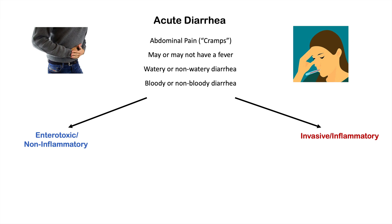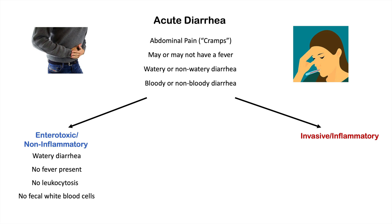Knowing the pathogenic mechanism makes it easy to remember the symptoms. With enterotoxic non-inflammatory causes, we see watery diarrhea due to the ion efflux drawing water into the GI lumen. There's oftentimes no fever because it is usually toxin-mediated with no invasion of microorganisms into GI cells, so there's no inflammation or infection of underlying tissue. There's no leukocytosis and no fecal white blood cells in enterotoxic acute diarrhea.